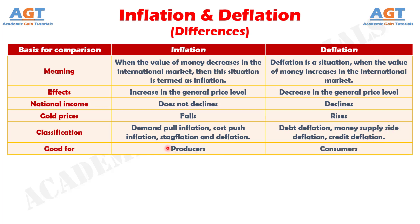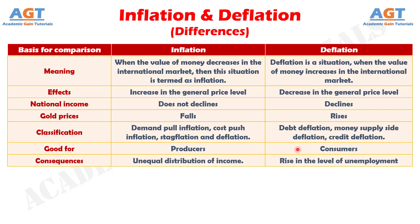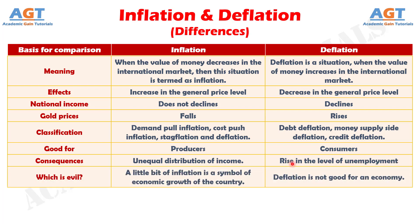Number six: inflation is good for producers, whereas deflation is good for consumers. Number seven: a consequence of inflation is the unequal distribution of income, whereas a rise in the level of unemployment is a consequence of deflation. And difference number eight: a little bit of inflation is a symbol of economic growth of the country, whereas deflation is not good for an economy.